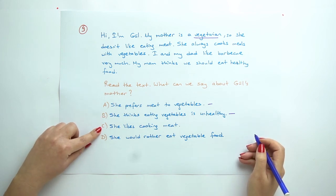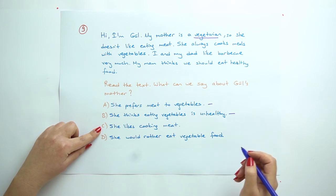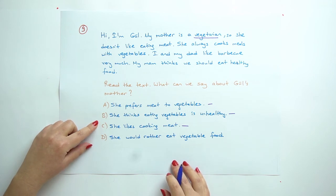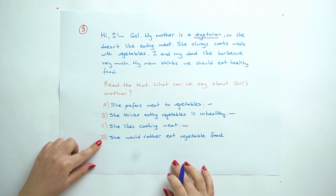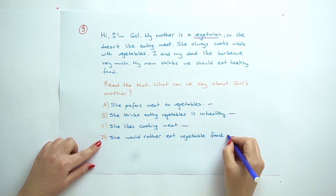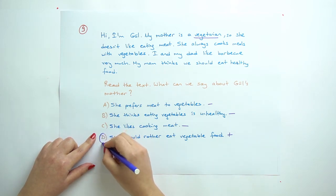And C: She likes cooking meat. Can we say this one? No, of course, she is a vegetarian. And D: She would rather eat vegetable food. Yes, we can say this one.